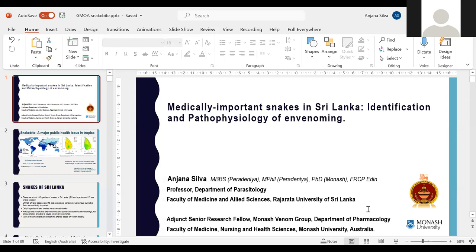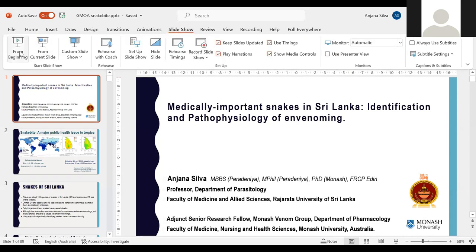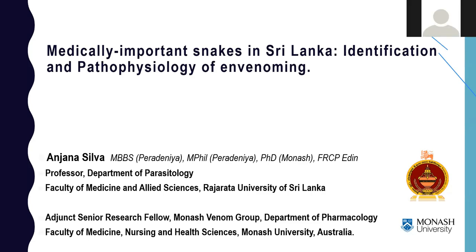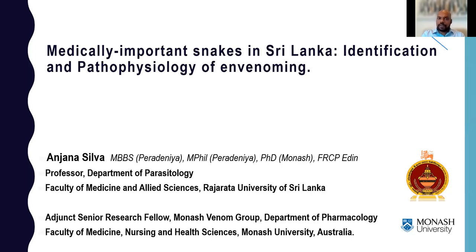In this lecture, I am focusing on a bit of introduction with regards to medically important snakes, and how we can identify them practically in an ETU setting, what kind of problems we encounter in identification, and then a little bit of pathophysiology. Pathophysiology of snake venom is something that is often less spoken about, so it would be better to have some understanding of how snake venom causes various pathophysiological alterations in humans, which might help you in taking certain clinical decisions.